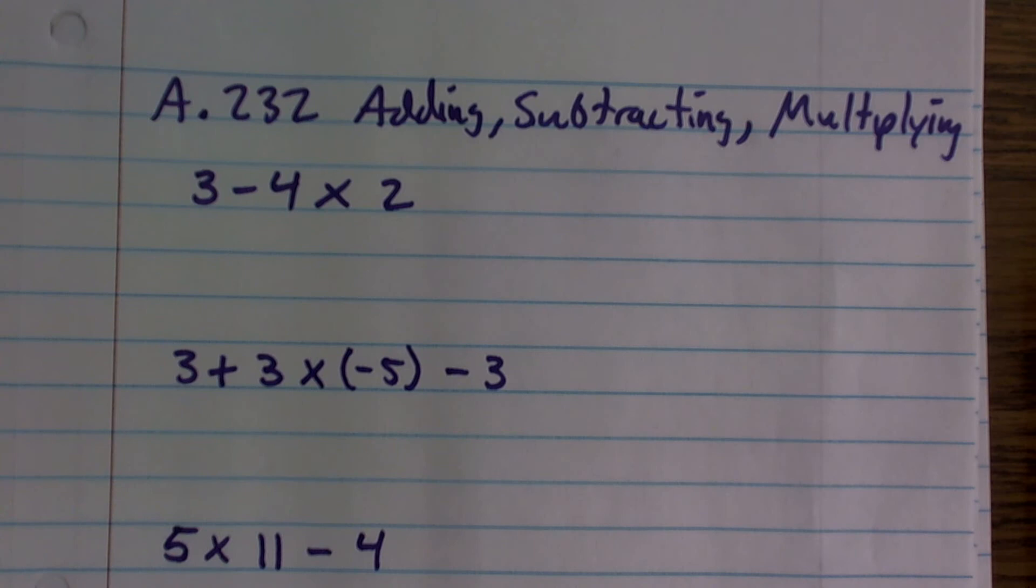So the first thing I'm going to do is isolate the multiplication problem. I have to do that first. Don't worry about left to right with multiplication. Just find multiplication first. Then we'll complete the rest of our operations.